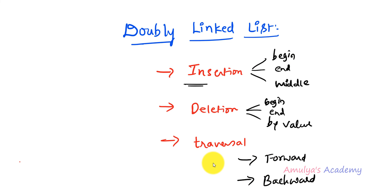In the traversal operation, we go through each node and print its data. Because every node contains both a forward link (next) and a backward link (previous), you can traverse in the forward direction and the backward direction. If possible, in the next tutorial we will see how to implement the doubly linked list in Python. That's it for now — thank you for watching, don't forget to subscribe, and take care.